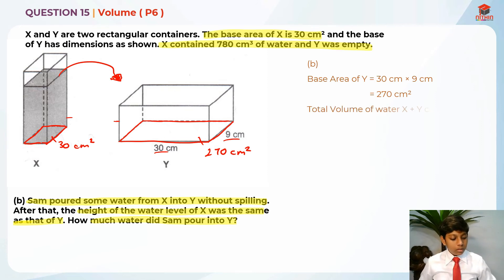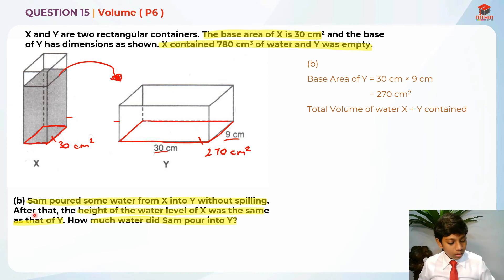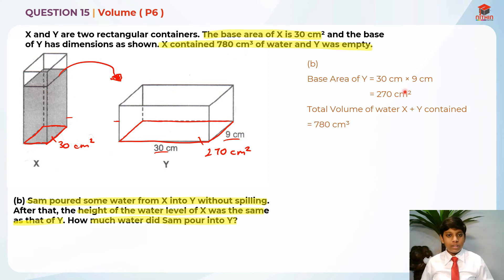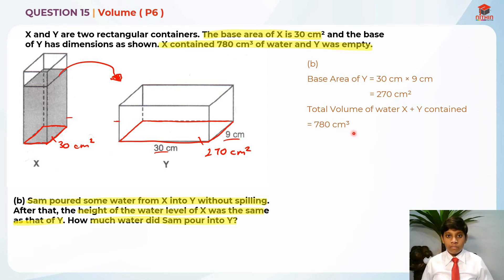The total volume of water in X and Y combined is 780 cm³ plus nothing, since Y was empty. So the total volume is 780 cm³, because Y had 0 cm³ to start with.